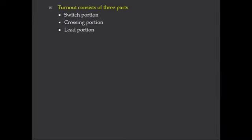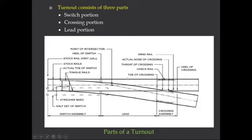The turnout, or points and crossing, consists of three parts: namely the switch portion, the crossing portion, and the leading portion. The front portion is called the switch, the rear portion is called crossing, and the portion in between the switch and crossing is called the lead portion.